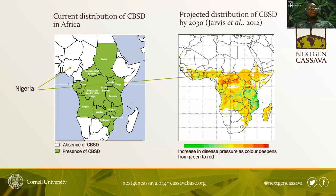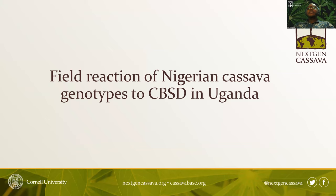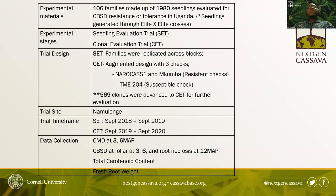The National Roots Crops Research Institute Umudike sent 5,000 seeds to Uganda for evaluation. Out of the 5,000, 1,980 seedlings emerged, comprising 106 families. These seedlings were generated through elite-by-elite crosses.